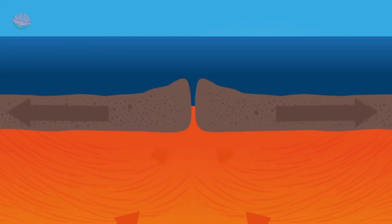When the plates diverge, it creates a gap in the Earth. Lava then moves upwards to fill the gap.